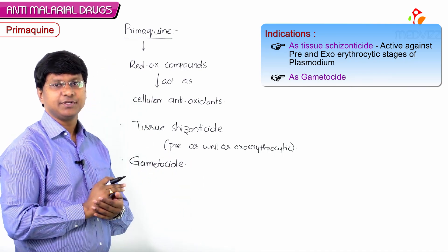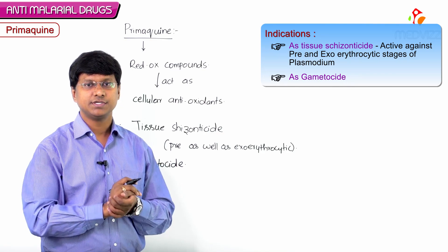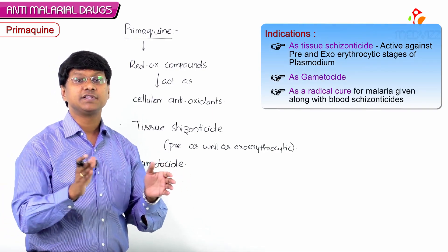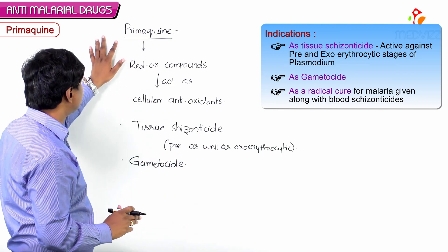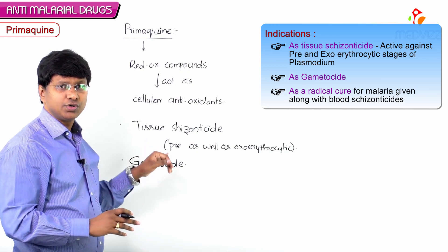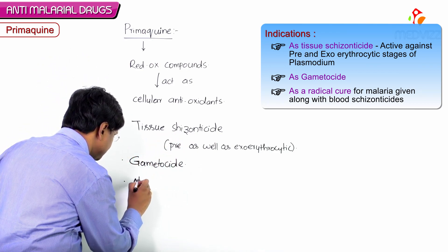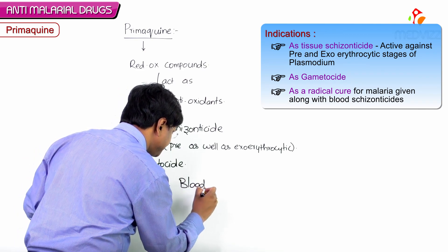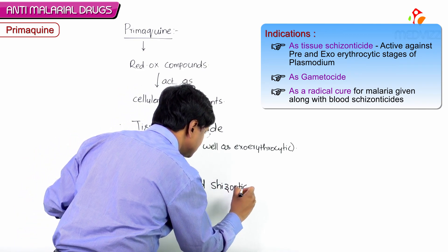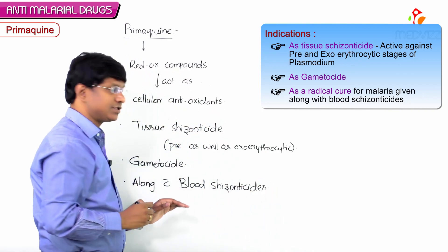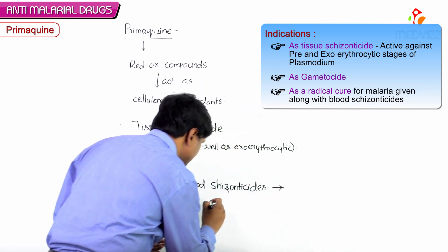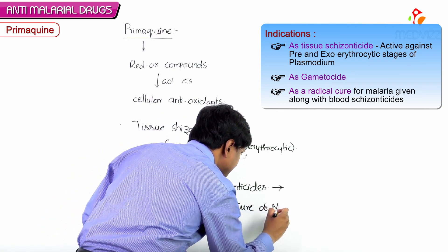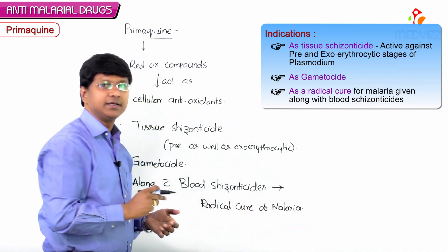Not only is primaquine a tissue schizonticide, it is also a gametocide — it kills both male and female gametes. Primaquine is always used along with blood schizonticides for the radical cure of malaria.